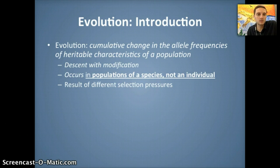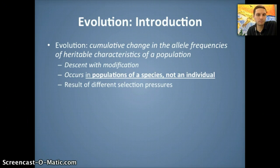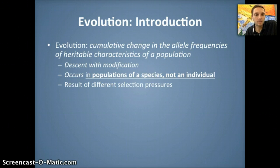Offspring are not all going to look the same — there's variation. Those that are best able to survive and reproduce, or best fit within the population, are going to do so. Those that are not will perish and are unable to reproduce. Over a long period of time, we can see a population — rather than an individual — change over time.